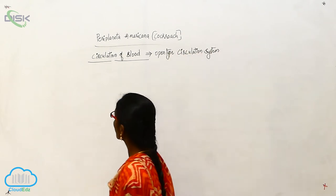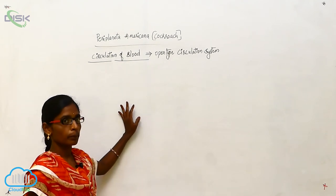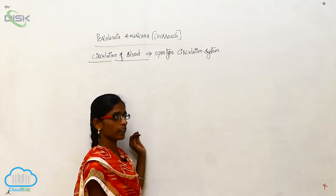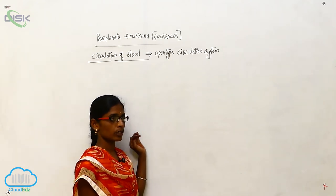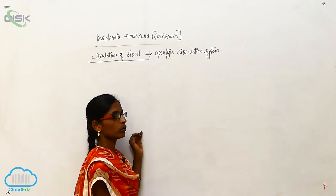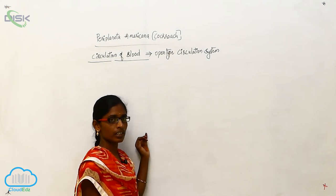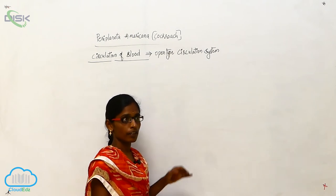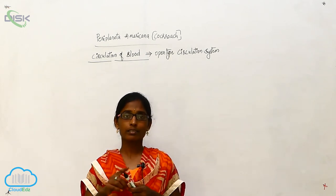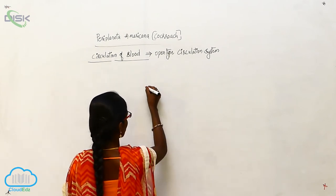In the circulation of Periplaneta, because of the alary muscle contraction, the blood goes from the heart to the aorta, and by the aorta it will go to the head. From that it will go to the perivisceral sinus and perineural sinus. Then, during alary muscle relaxation, the blood will go back to the heart. Let me explain this diagrammatically.